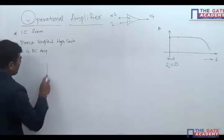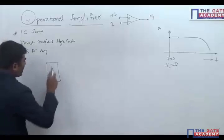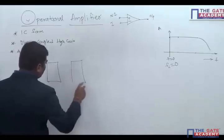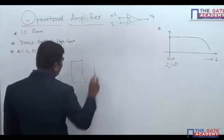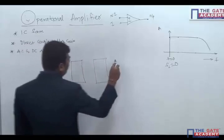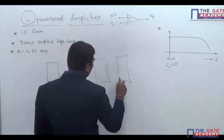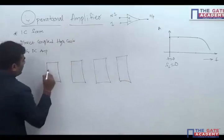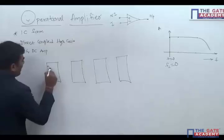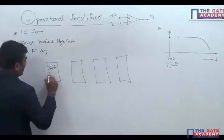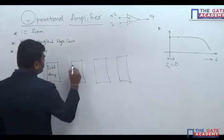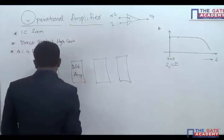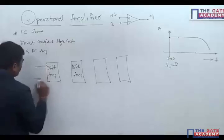The internal structure of an operational amplifier is not needed for us, but let us have an understanding of the block diagrammatic view. This is a block diagrammatic view. This is a differential amplifier — one or two gain stages. In some cases it can be 1, in some cases it can be 2.